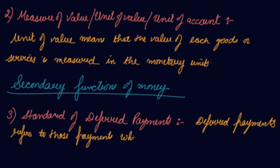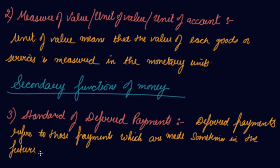Deferred payments are made sometimes in the future. In the earlier barter system, we used to exchange goods for goods — there was the problem of double coincidence of wants. Moreover, if you had wheat with you after some time, it would be considered a perishable good. Since you manufactured wheat, you needed to exchange it as soon as possible. But with the evolution of money, the standard for deferred payments emerged, meaning you can hold on to your money or buy goods and services and make the payments in the future.